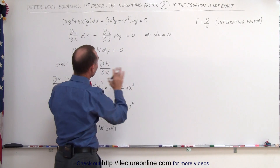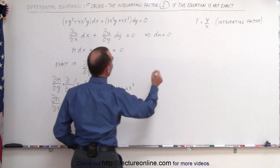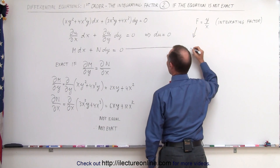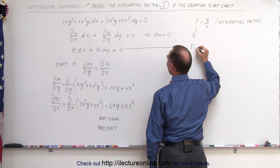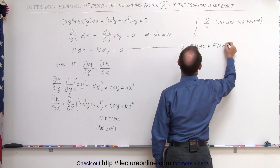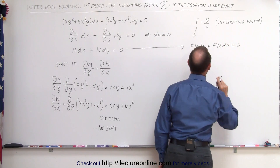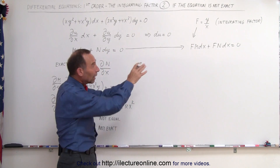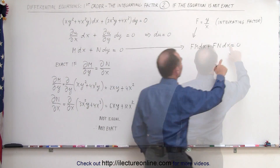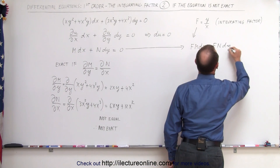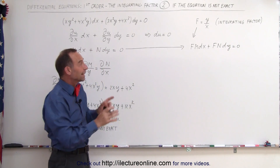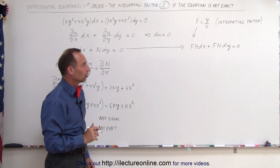We can multiply both sides of the equation by f, giving us f·M dx plus f·N dy equals 0. If we pick the correct integrating factor, this will now be an exact equation and we can find the solution to the differential equation.